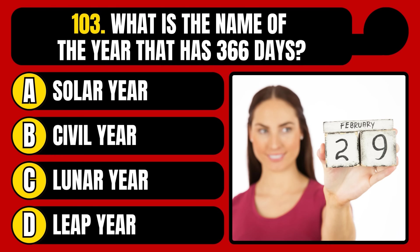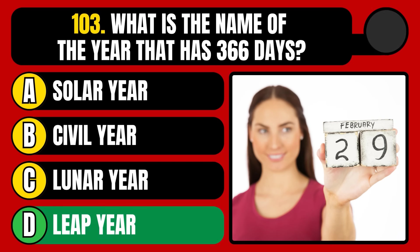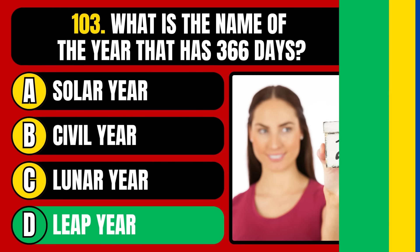What is the name of the year that has 366 days? Solar year, civil year, lunar year, or leap year? The correct answer is option D, leap year.